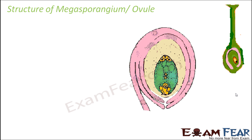Now let us talk about the structure of the megasporangium, or ovule — the place where exactly the process of female gamete formation occurs. Just like in the male counterpart where the microsporangium produced microspores that later developed into pollen grains, here the megasporangium will produce megaspores. One of those megaspores will develop into the egg cell, which is the female gamete.